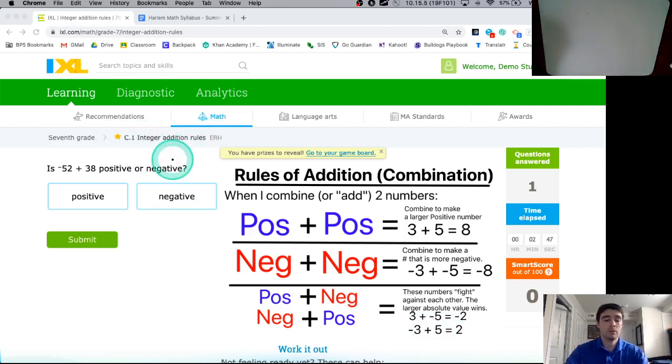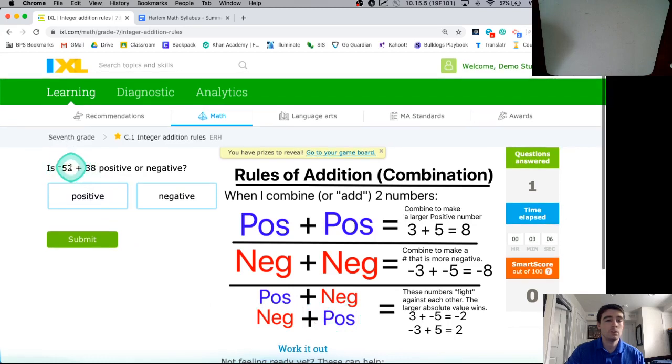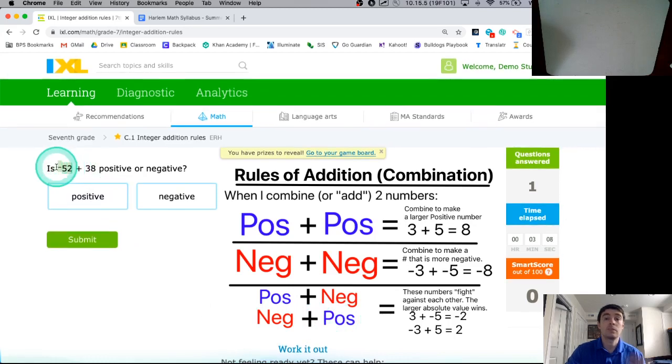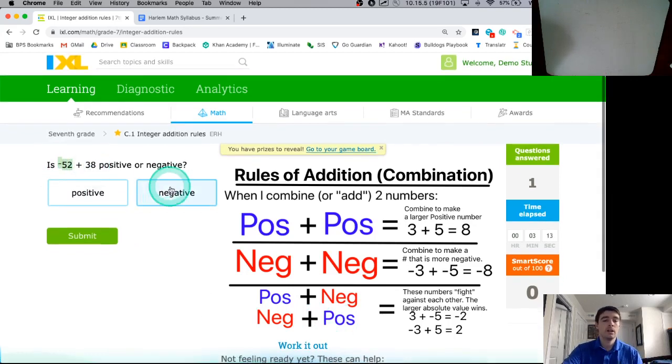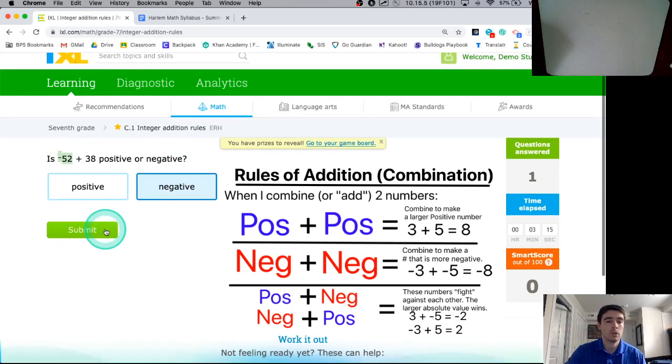So for assignment C1, the integer addition rule, the big thing that they're going to ask you to do is they're going to just ask you: when you combine two numbers, two integers, do they make a positive or a negative result? Here for our first example we see, is -52 + 38 positive or negative? This is an example of a negative number plus a positive number. The -52 has a greater absolute value. There's more negative units than positive units, so the negative value is going to win out.